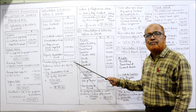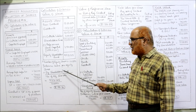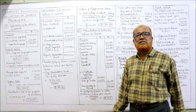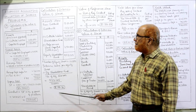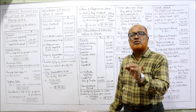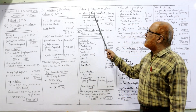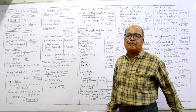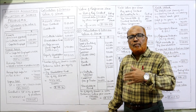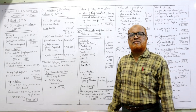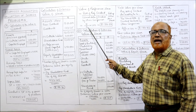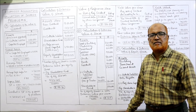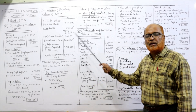Equity shareholders' fund = ₹9,53,125. Number of equity shares = 10,000. Intrinsic value per share = ₹9,53,125 ÷ 10,000 = ₹95.31. For the value of preference shares: our company pays 8% dividend while the normal rate is 6%, so value of preference share = (8 ÷ 6) × ₹100 = ₹133.33.